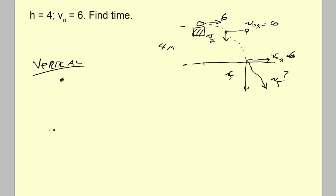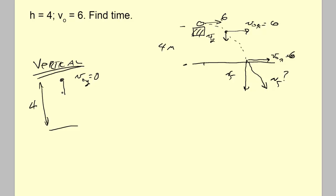Vertically, here's the situation: we have a projectile 4 meters above the ground. Vertically, the initial velocity is 0 — I'm talking about the vertical velocity, not the overall initial velocity. I could put a little 'y' subscript here, but since we're only thinking about vertical behavior, it's not necessary. If the subscript helps you, by all means use it.